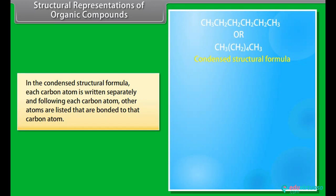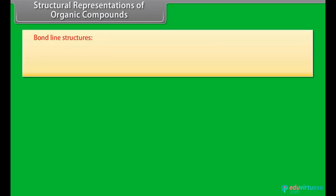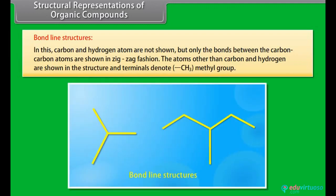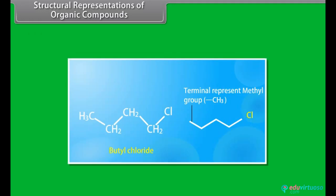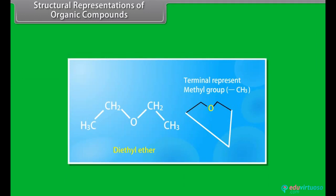In the condensed structural formula, each carbon atom is written separately, and following each carbon atom, the other atoms bonded to that carbon are listed. In bond-line structures, carbon and hydrogen atoms are not shown, but only the bonds between the carbon atoms are shown in a zigzag fashion. Atoms other than carbon and hydrogen are shown in the structure, and the terminals denote a methyl group. For example: butyl chloride, propyne, cyclohexane, diethyl ether, dimethylamine.